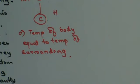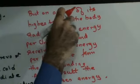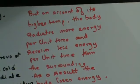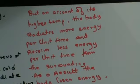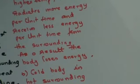The body continues to radiate heat to the surrounding. At the same time it absorbs heat from the surrounding. But on account of it being at the same temperature as the surrounding, the body radiates the same energy per unit time as it receives per unit time from the surrounding. As a result, the body neither loses nor gains energy and the temperature of the body remains the same. This whole thing is Prevost's theory.